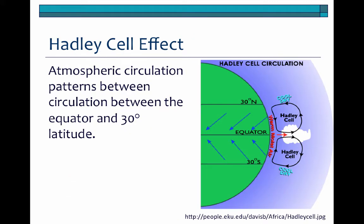Another climatic effect is the Hadley Cell effect, and this is where we see a circulation at the equatorial regions up to about 30 degrees north and 30 degrees south. These circulation patterns create Hadley cells where the sun warms areas along the equator, which is the region that gets the greatest amount of sunshine on a consistent basis. That warm air rises to allow cooler air to come in underneath it, and that actually disperses out to the north or to the south, creating these prevailing winds.